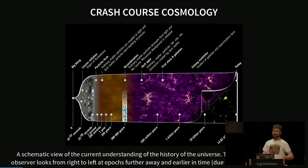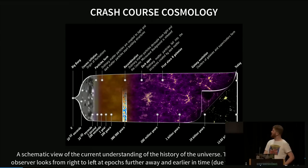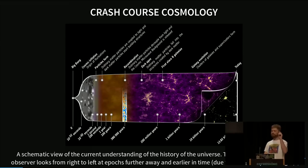More and more structure forms — this dark matter structure is shown in purple — but the structure we actually see are the galaxies. The galaxies inhabit this rich dark matter structure basically just as tracers. We don't see the full structure, but only some light bulbs, if you want to say, on this network of dark matter structure.